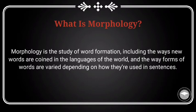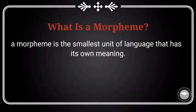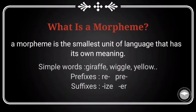Since we're talking about words, it is necessary to define a few specialized linguistic terms such as morphemes, lexemes, types, tokens, and so on. So what is a morpheme? A morpheme is the smallest unit of language that has its own meaning. Simple words like 'giraffe,' 'wiggle,' and 'yellow' are morphemes, but so are affixes such as the prefixes 're-' and 'pre-' in words like 'rewash' and 'prefix.'